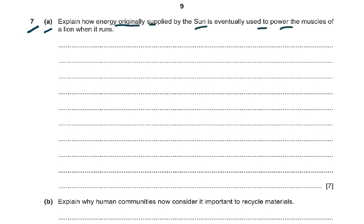Question 7a: explain how energy originally supplied by the sun is eventually used to power the muscles of a lion when it runs. You must trace from the sun: light energy is converted to chemical energy via photosynthesis in plants. That energy is stored as glucose, starch, or other carbohydrates and converted into proteins. Energy passes from plant to herbivore — for example, a deer eats grass — then from herbivore to lion.